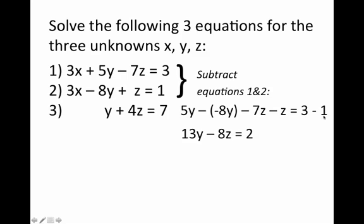This simplifies a little bit to become 13y minus 8z. Notice that the minus of minus 8y is plus 8y, and so that adds to 5y to make 13. So we have 13y minus 8z equals 2.